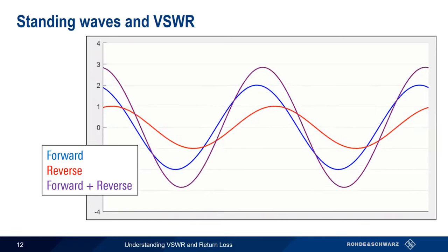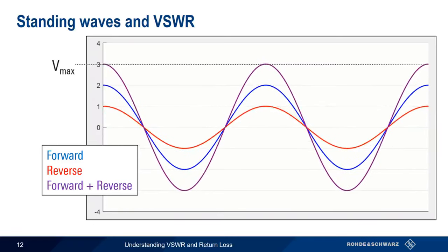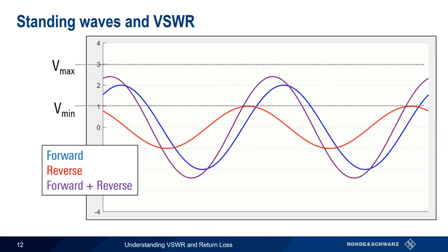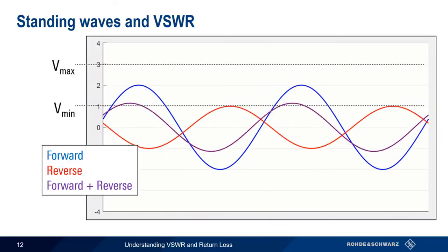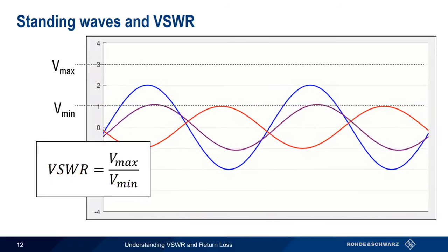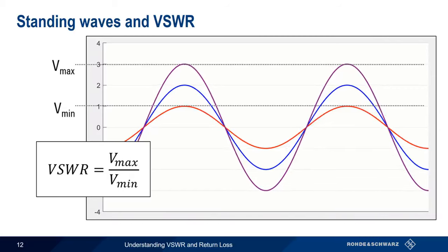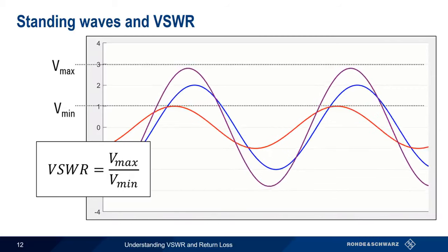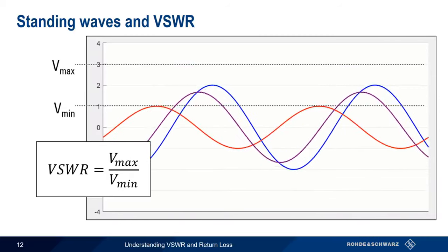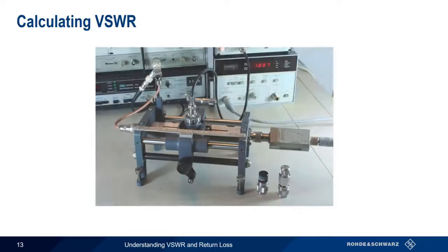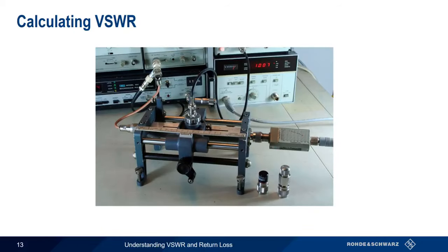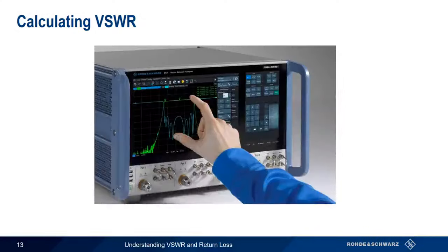Voltage standing wave ratio is simply the ratio of the highest to the lowest voltages in our standing wave. In this example, the peak value is 3 and the minimum value is 1, so we have a VSWR of 3. Many years ago, VSWR was calculated by physically measuring voltages at different points along the transmission line. But today, VSWR can be automatically measured and calculated using a network analyzer.